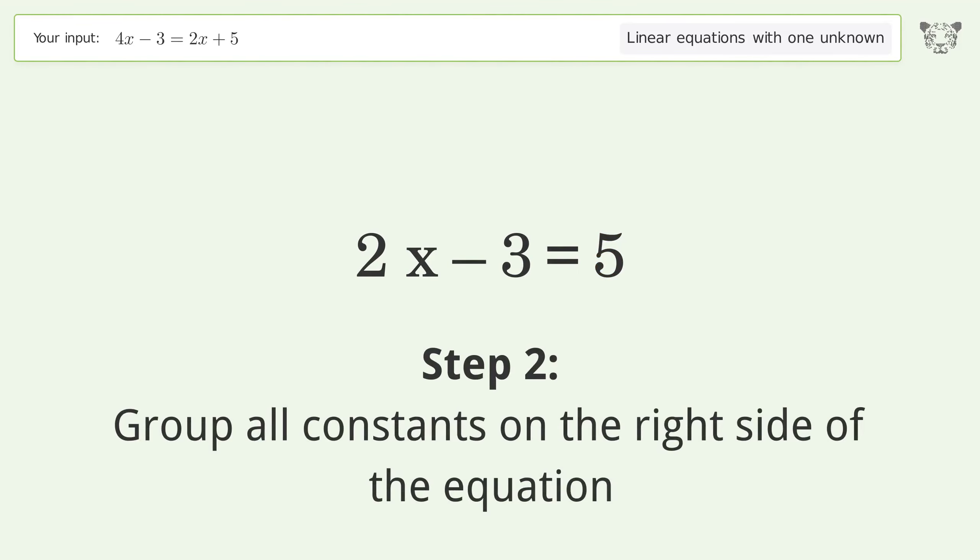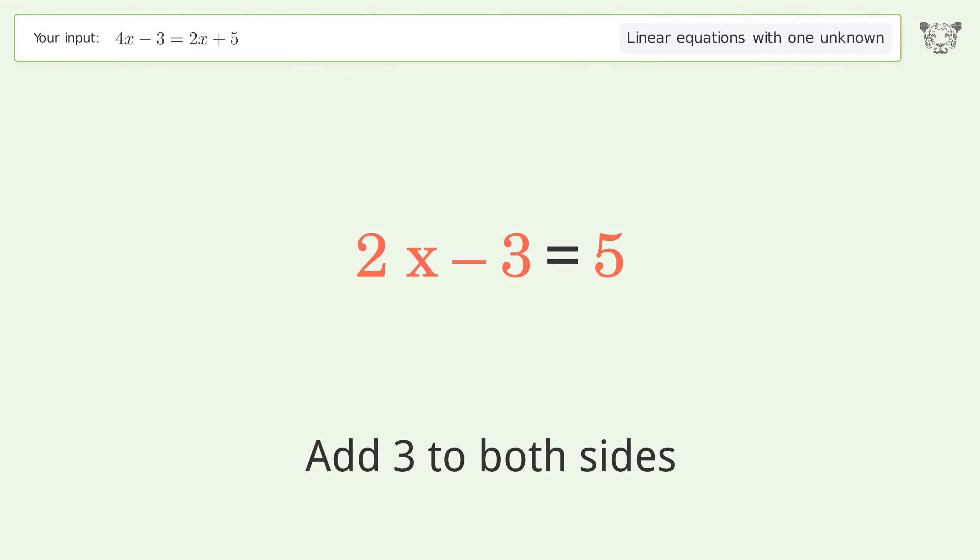Group all constants on the right side of the equation by adding 3 to both sides. Simplify the arithmetic.